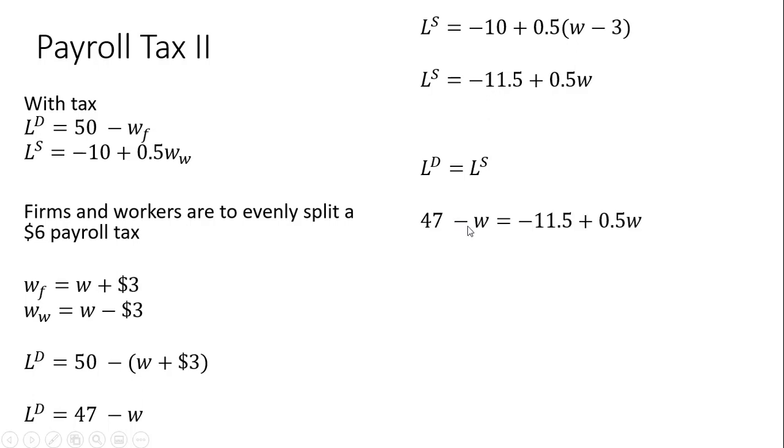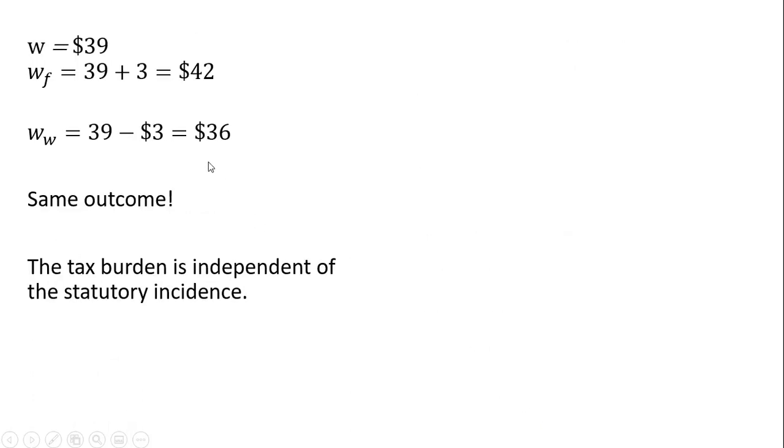Setting labor demand equal to labor supply, and solving. The wage here is $39, but we're not done yet. We're interested to see what happens on an after-tax basis. So for firms, firms do pay workers $39, but then the firm has to write a check to the government for $3, so the after-tax wage bill is $42. Just like in our last example, when firms were actually 100% responsible for writing and submitting the check.